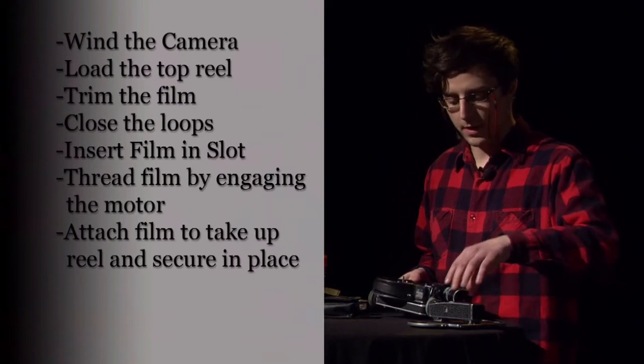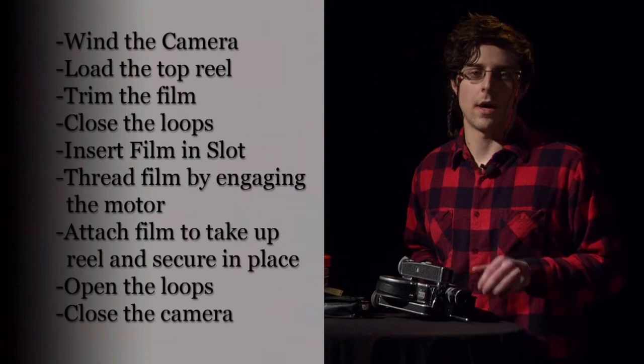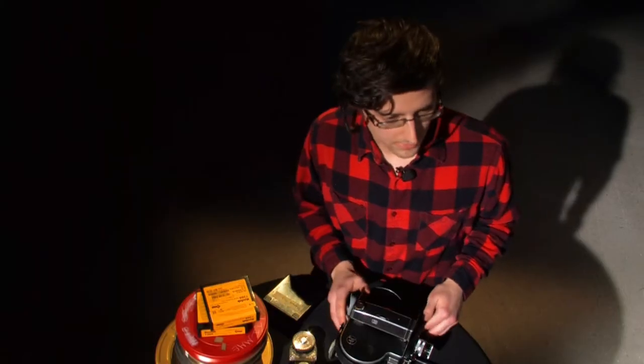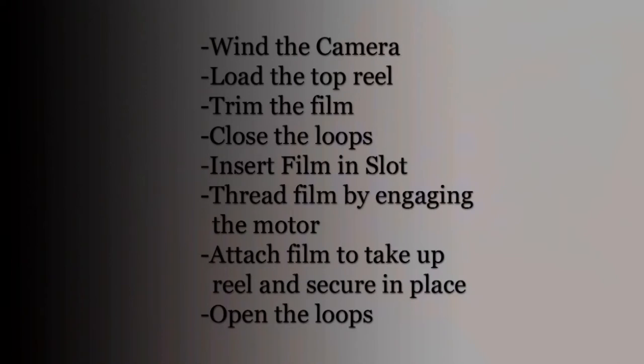To recap on how to load this camera: first wind the camera to give it power, load the top reel into place, trim the film to make sure it threads smoothly, close those loops back up, insert the film into the slot, engage the motor to thread the film, open the loops back up, close the camera and you are ready to shoot.